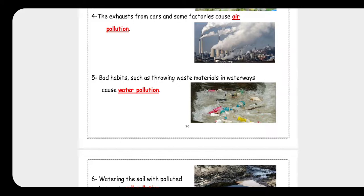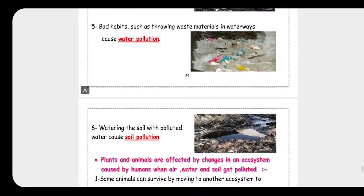Air pollution is caused by exhaust from cars and factories. Throwing waste materials into waterways causes water pollution. Watering the soil with polluted water causes soil pollution.